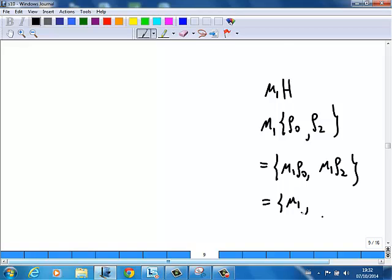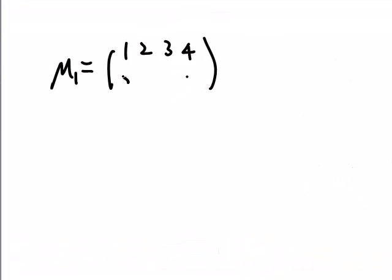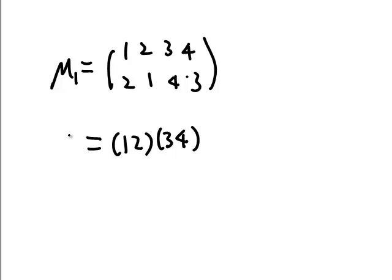Let's do the calculation. I need to remember what mu1 is first. So mu1 is: 1, 2, 3, 4 in the first row, and 2, 1, 4, 3 in the second row. Now I can write in cycle notation: 1 goes to 2, 3 goes to 4. So mu1 is (1 2)(3 4) in cycle notation.